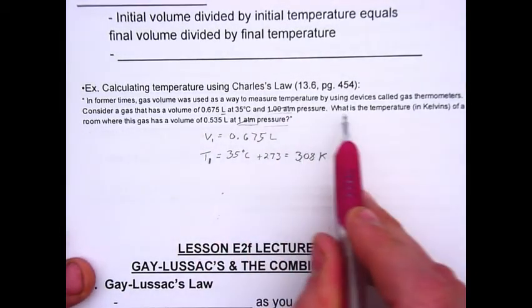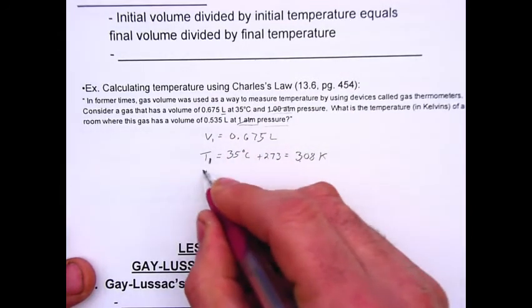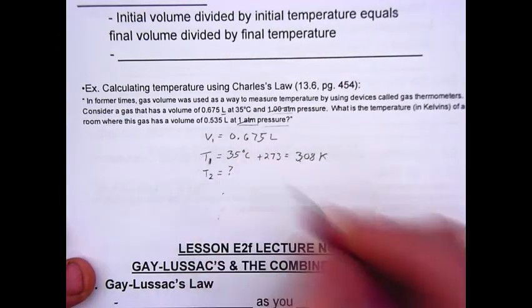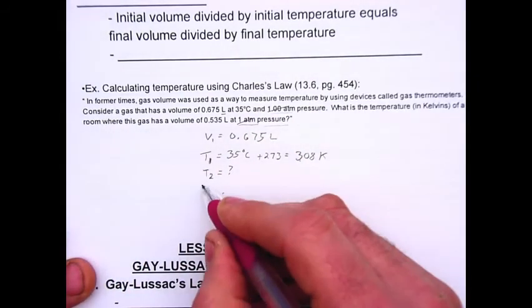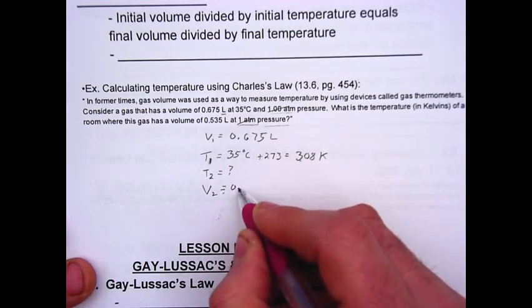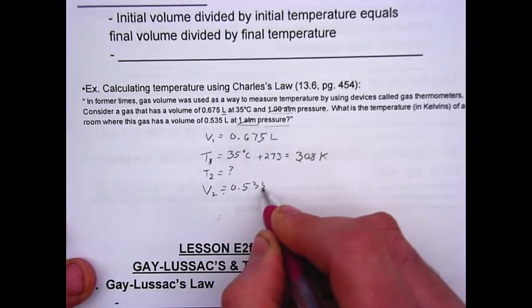And then I keep reading, what is the temperature? So it's asking for T2 in kelvins of a room where this gas has a volume of 0.535 liters.